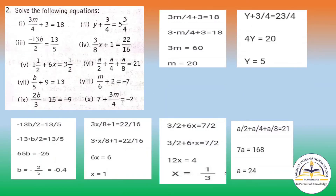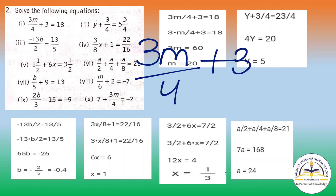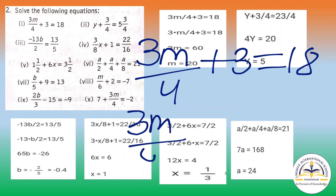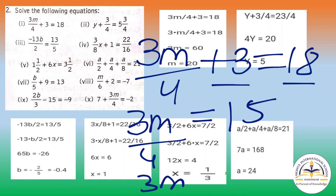Now question number 2, solve the following. First question: 3m by 4 plus 3 equals to 18. So we will write 3m by 4 as it is. Now you have to transfer plus 3 to the RHS — it will become negative — so 18 minus 3, you will get 15.